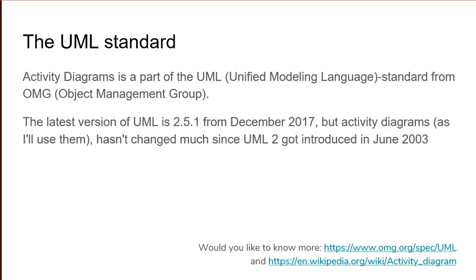A bit about the UML standard. Activity diagrams are called UML activity diagrams because they are part of the UML — Unified Modeling Language — standard from OMG, the Object Management Group. They have built an enormous standard describing all sorts of diagrams, of which activity diagrams is just one. At a later stage you will probably encounter state machine diagrams, and if you continue with object-oriented programming, you will also meet class diagrams and probably sequence diagrams. The latest version of UML is 2.5.1 from December 2017, but activity diagrams haven't changed much since UML2 was introduced in June 2003, meaning you can use most resources all the way back to 2004.